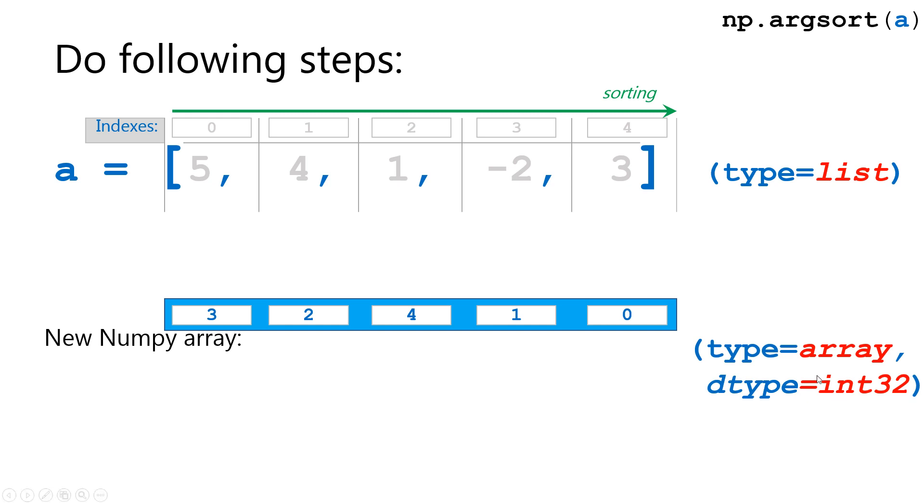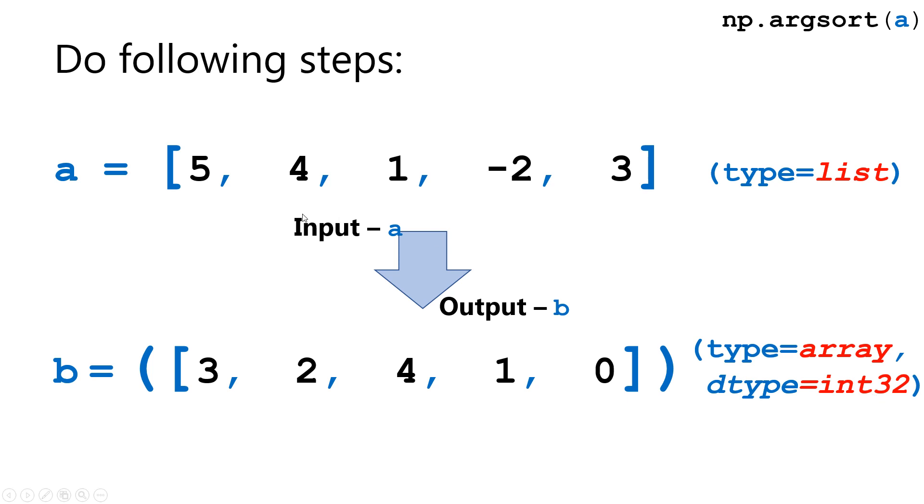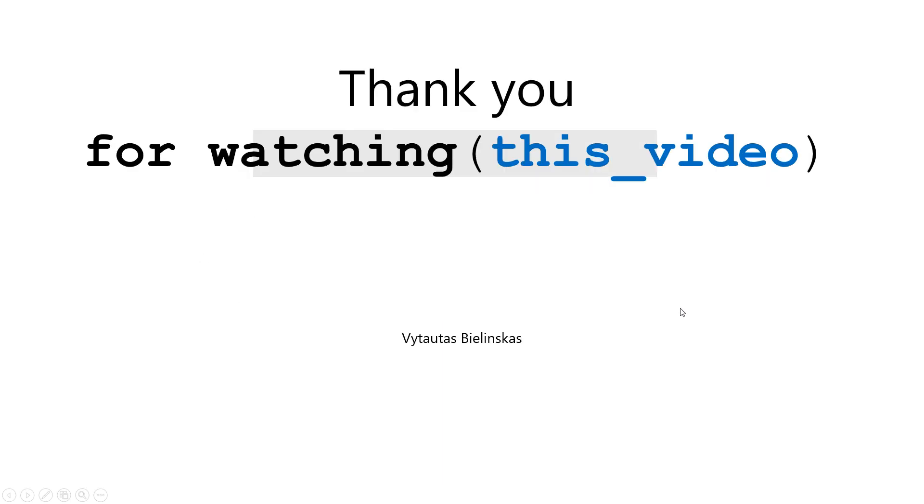Okay, so this is the result of NumPy argsort. It is an array with dtype integer 32, and it is quite simple. We have input variable a is [5, 4, 1, -2, and 3], and we have output variable b is [3, 2, 4, 1, and 0]. So this is the input, this is the output.